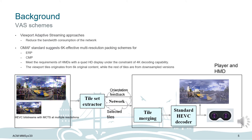Viewport adaptive streaming approaches reduce the bandwidth requirement for 360-degree content transmission. They use multiple resolution bitstreams in which only the viewport is transmitted in high quality according to the orientation change of the viewer. The OMAF standard suggests two 6K effective multi-resolution packing schemes for ERP and CMP, which meet the requirements of HMDs with quad HD displays under the constraint of 4K decoding capabilities. For both methods, the viewport tiles originate from 6K original content while the rest of the tiles come from a downsampled version.